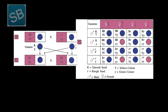When F1 was multiplied and resulted in the F2 generation, out of 16 seeds: 9 seeds were round and yellow-seeded plants, 3 were wrinkled but yellow-seeded plants, another 3 were round and green-seeded plants, and 1 was the wrinkled and green-seeded plant.